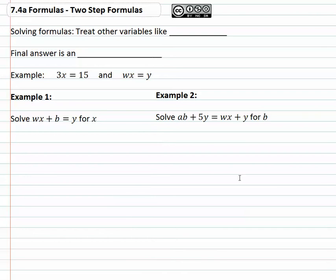When we're solving a formula, it's important we treat all the other variables just like numbers. And when we do that, the final answer doesn't come out to a simple answer like seven or negative twelve halves. The final answer this time is going to be some expression.